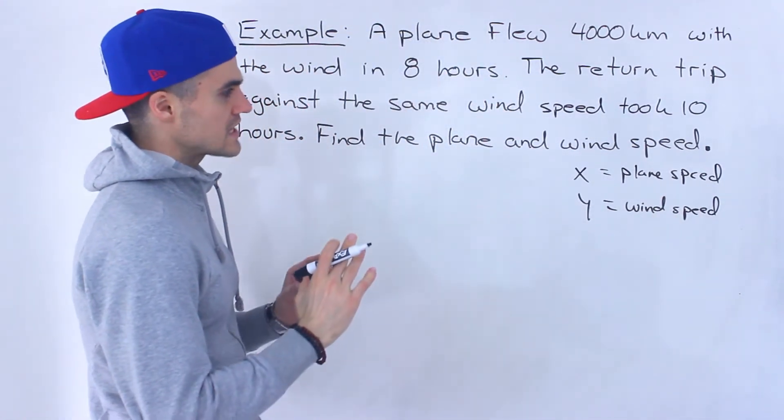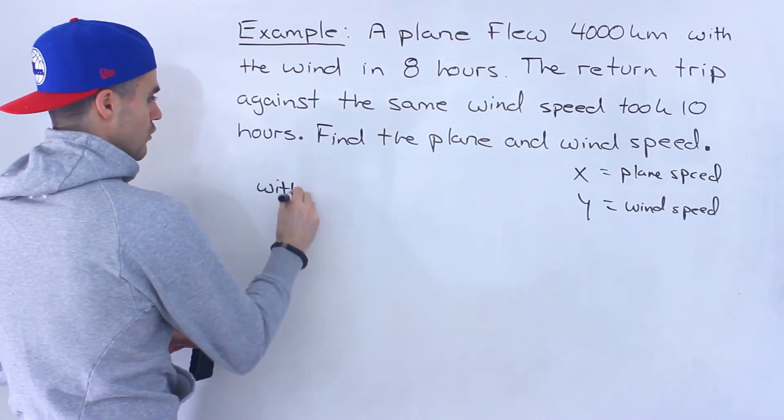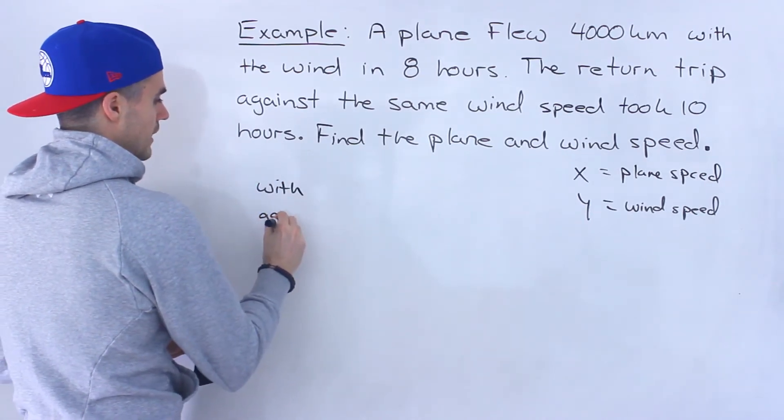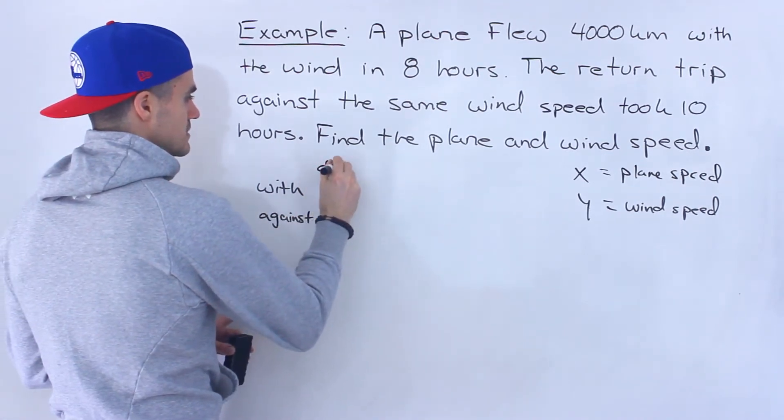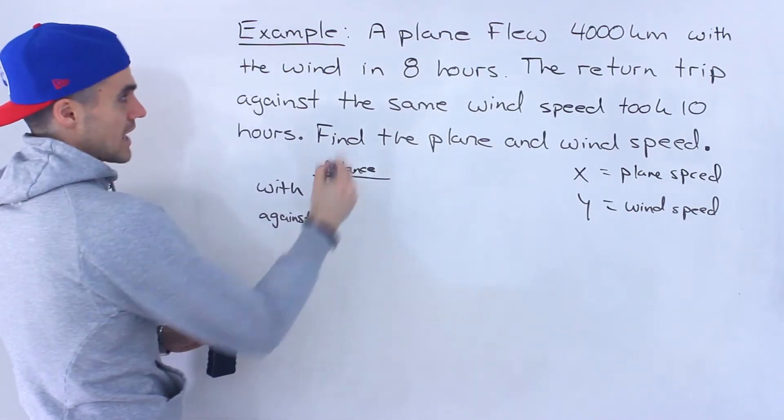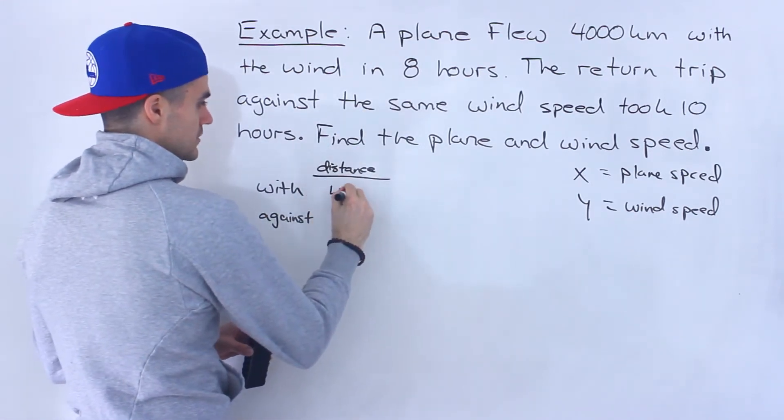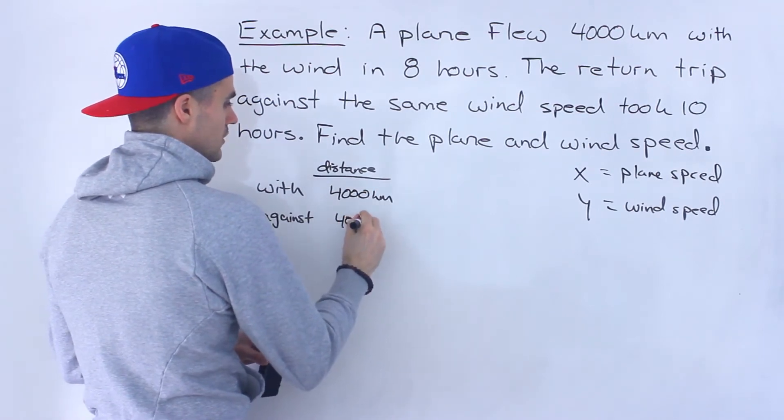So notice that there's two types of trips being taken here. We're going with the wind and then against the wind and notice that the distance for both trips is the same. It's that 4,000 kilometers. So creating a little chart here.